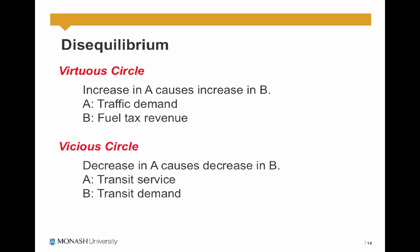There is also the concept of disequilibrium, where we have a virtuous circle and a vicious circle. In a virtuous circle, increasing A causes increasing B, which is favorable. For example, traffic demand increases, fuel tax revenue increases, you invest the revenue back in the transport system, which may induce more traffic demand. In a vicious circle, decreasing A causes decreasing B. A good example is transit: if transit quality of service goes down, transit demand goes down, you have less revenue to invest in transit, so transit service goes down further — you get stuck in a vicious circle.